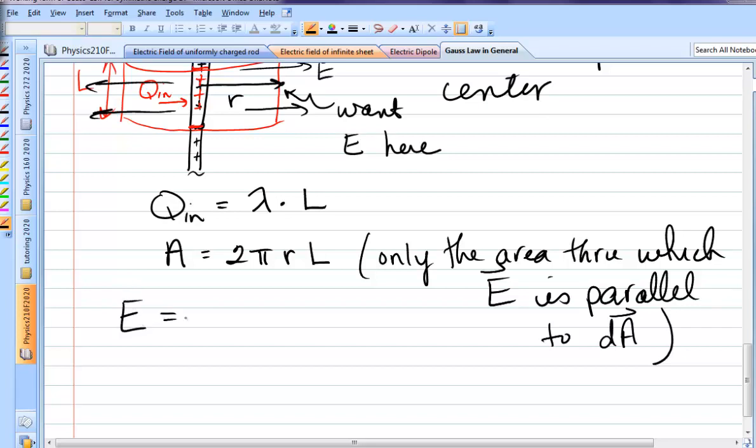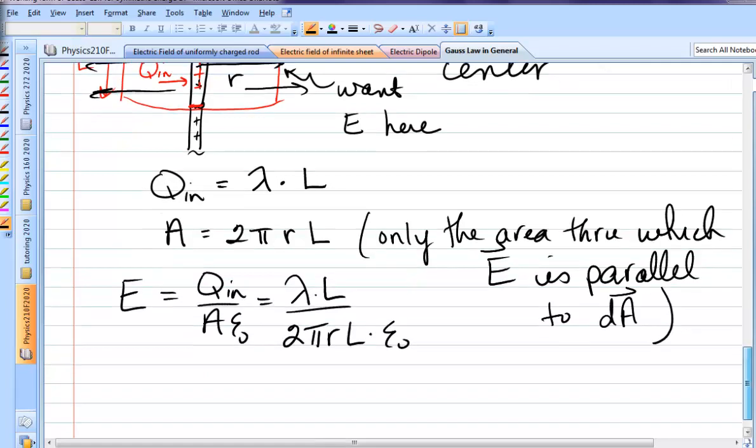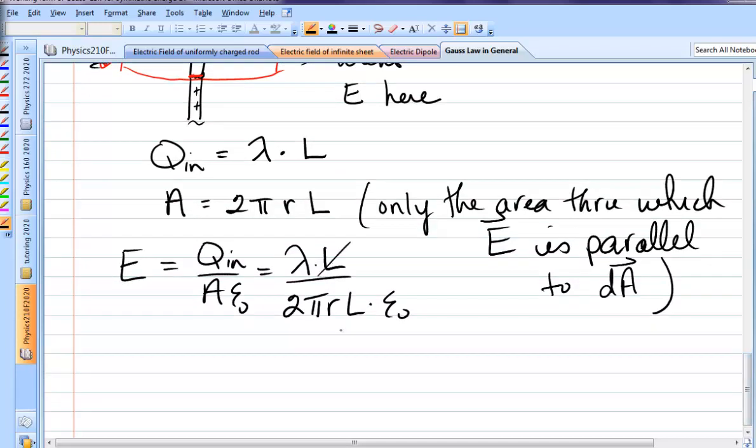That's it. We put it into the formula. Q_in over A epsilon naught. And we get lambda times L over 2 pi r L epsilon naught. Notice how the L for the Gaussian surface cancels out? Does not matter what the length of the Gaussian surface is. Anybody could have chosen any length you wanted. So, the electric field due to an infinitely long rod is lambda over 2 pi epsilon naught R. Sometimes we write this as 2k lambda over R. Because remember, k is 1 over 4 pi epsilon naught.